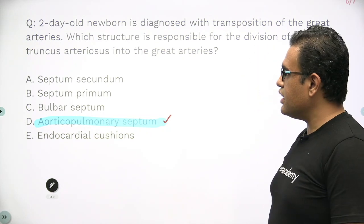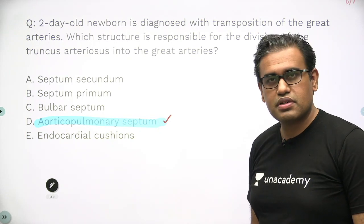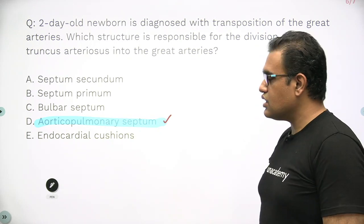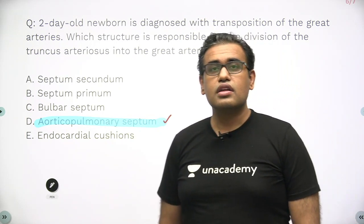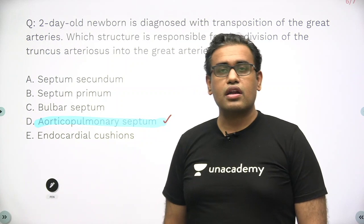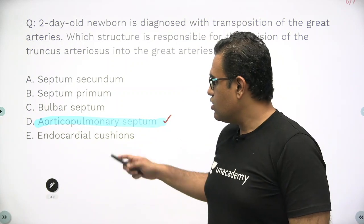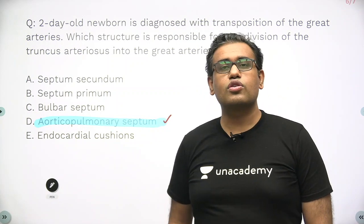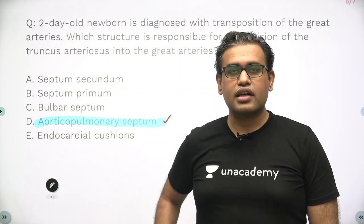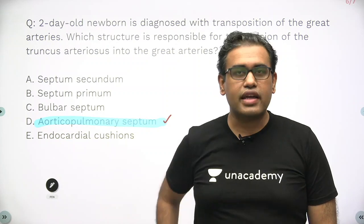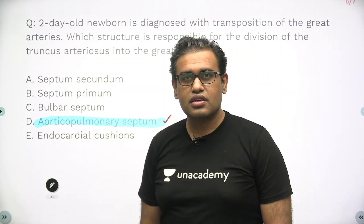Options A and B — septum secundum and septum primum — are for the interatrial septum. Option C, the bulbar septum, is for the division of the upper part of the interventricular septum. And option E, the endocardial cushions, are the central part and contribute mainly to the atrioventricular canals.